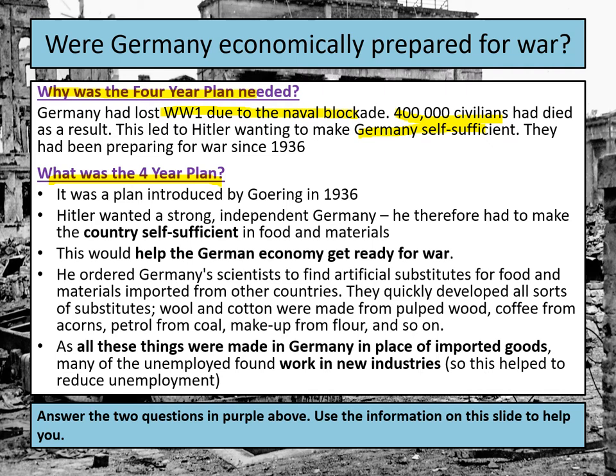Hitler had anticipated there would be a war in the future because of his aggressive foreign policy, and he wanted to make sure Germany didn't lose that future war. So, from 1936, they put in place the Four-Year Plan to get Germany ready for war within four years. They thought war would probably break out around 1940, and Hitler hadn't expected Britain and France to go to war over Poland in September 1939.